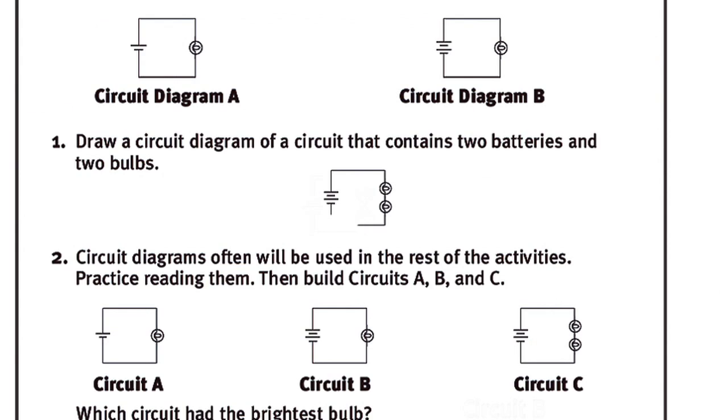Ask students, how would you draw a circuit diagram for a circuit that has two batteries and two bulbs? Students may guess that two symbols for bulbs are drawn next to each other with a connecting line, which represents a third wire. Tell students to draw their ideas on their activity sheets.